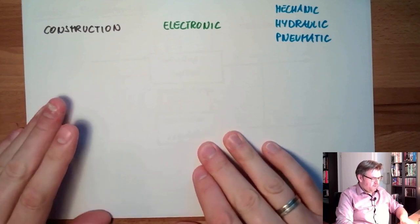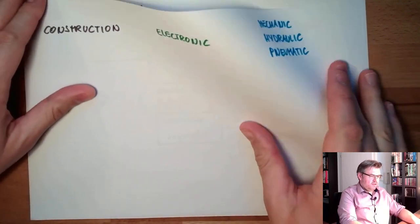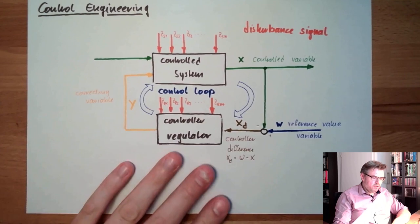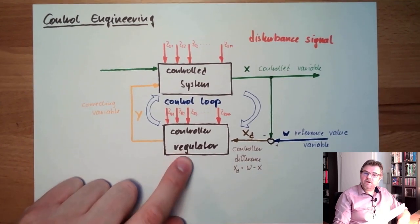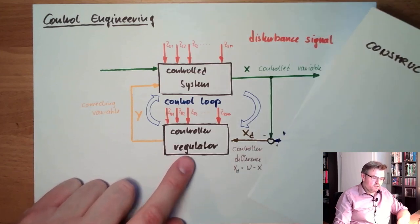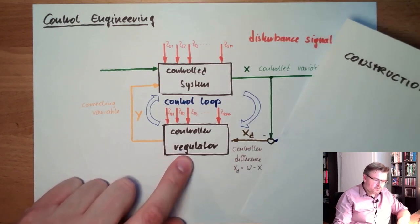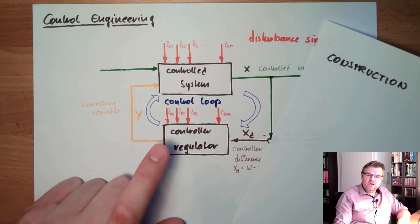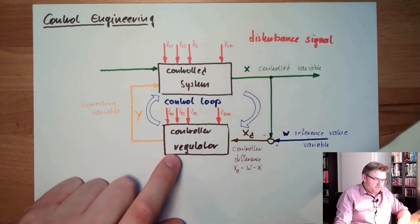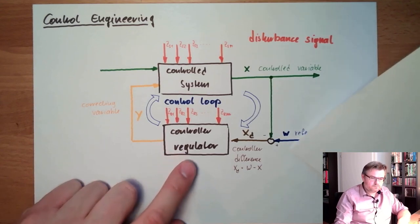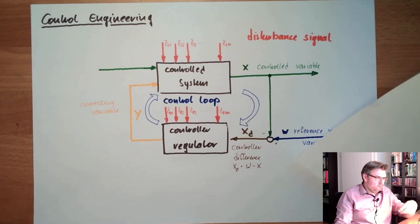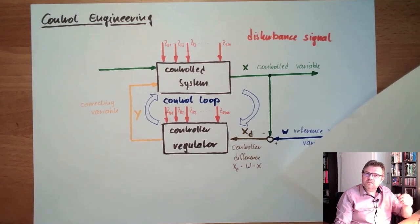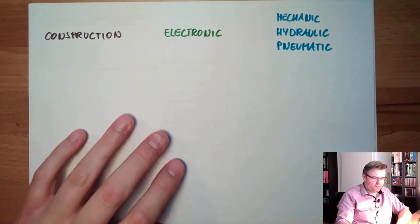If the controller is working just with air pressures, then it's a pneumatic controller. If it's working because of some rotation or forces, then it's a mechanical controller. If it's working with oil and pressures, then it's a hydraulic controller. Electronic controllers are working with electrical signals.